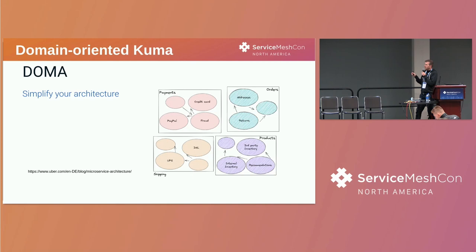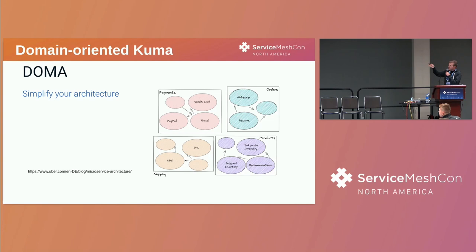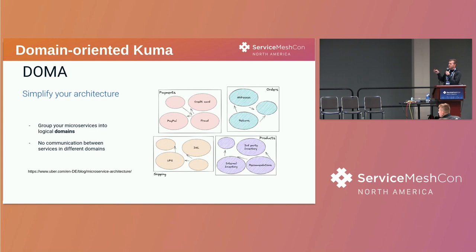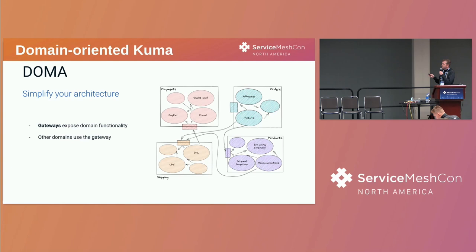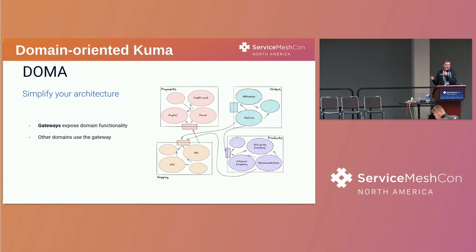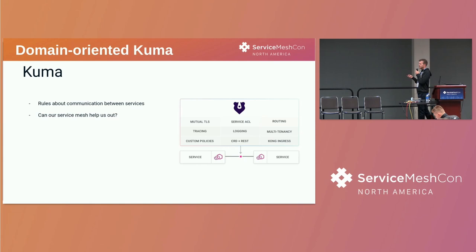There are two basic building blocks for DOMA. The first is you take your services and group them together according to the business domain they live in. Inside a domain, services communicate with each other directly, but services in different domains can't communicate at all — so you've essentially privatized the interfaces of those microservices. Then you introduce the idea of a domain gateway, which exposes the functionality of those domains in a public interface, consumable by services in other domains. Domains and gateways are really just rules about how services communicate, which is what a service mesh does — and we can use Kuma to enforce this architecture.